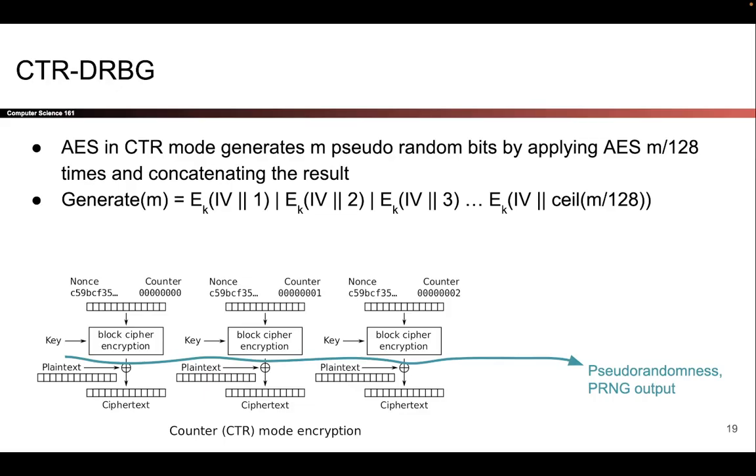So the CTR mode-based PRNG is one possible construction you can use to build a secure PRNG, and this is based on the fact that block cipher output is indistinguishable from random. So the output of this PRNG is also indistinguishable from random.